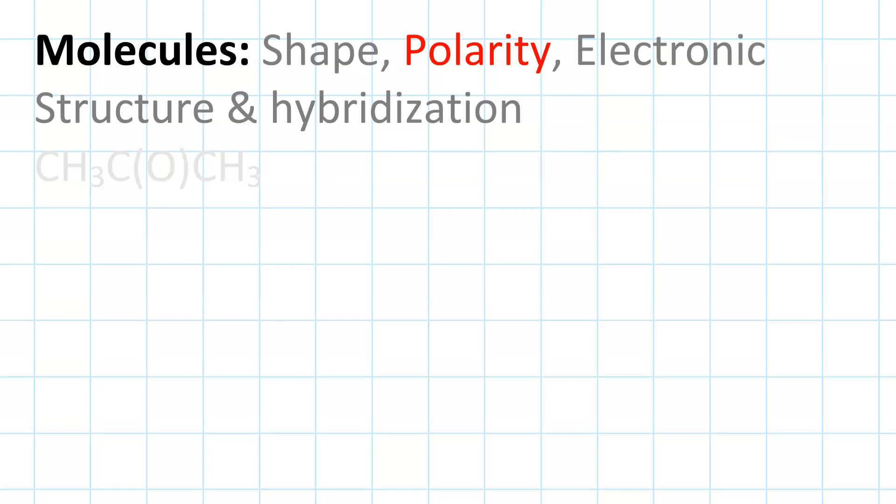Now let's do a more in-depth analysis. We'll look at the molecule acetone, which has the condensed structure CH3C(O)CH3.